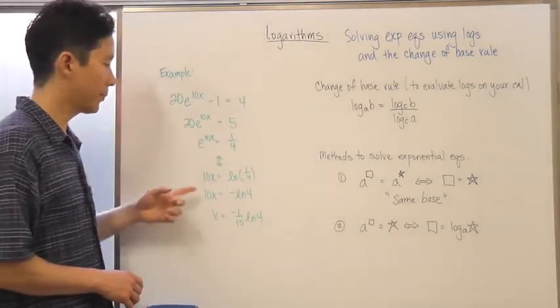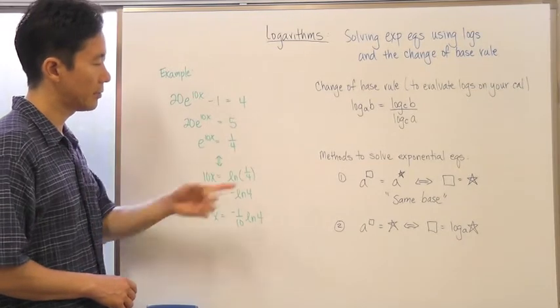in order to now solve for the 10x to get to the x, I need to change it to its logarithmic form and I come up with 10x equals the natural log of 1 over 4.